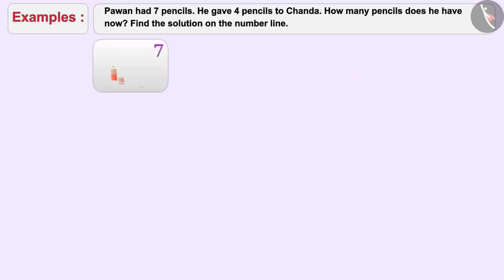Initially, Pawan had seven pencils, out of which he gave four pencils to Chanda. Number of remaining pencils can be obtained by subtracting four from seven.